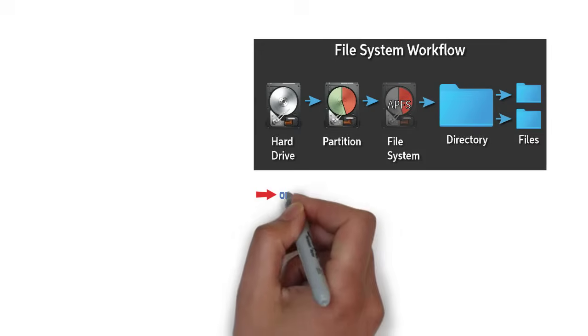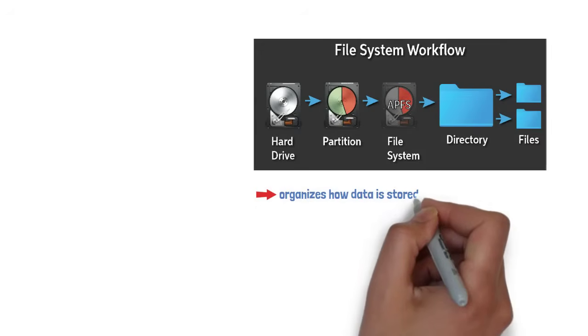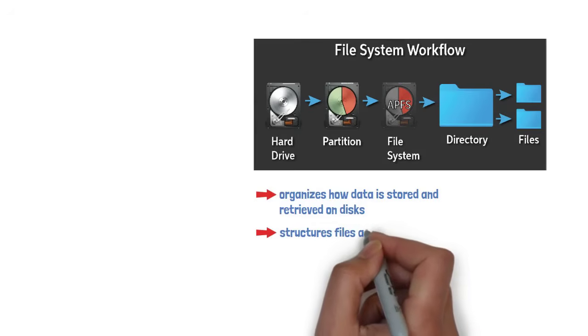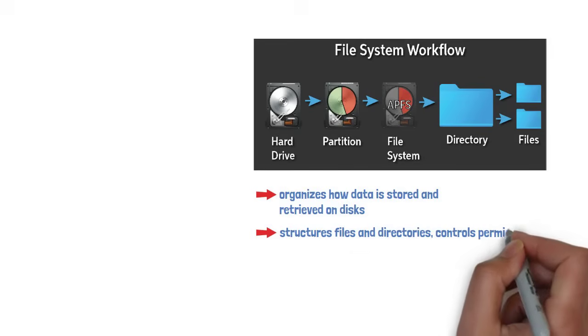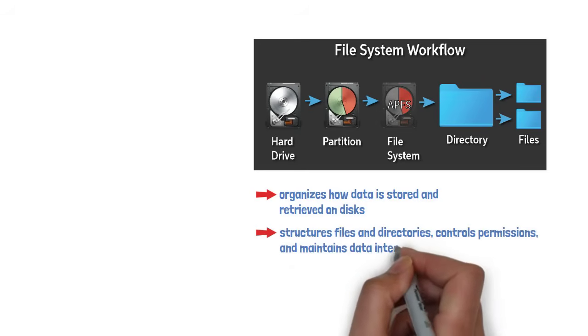A file system organizes how data is stored and retrieved on disks. It structures files and directories, controls permissions, and maintains data integrity.